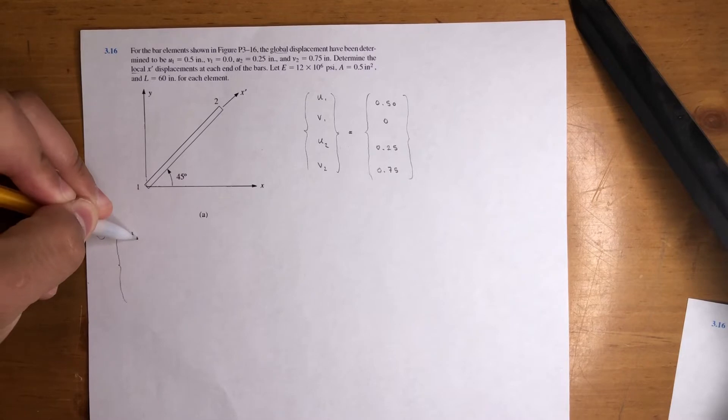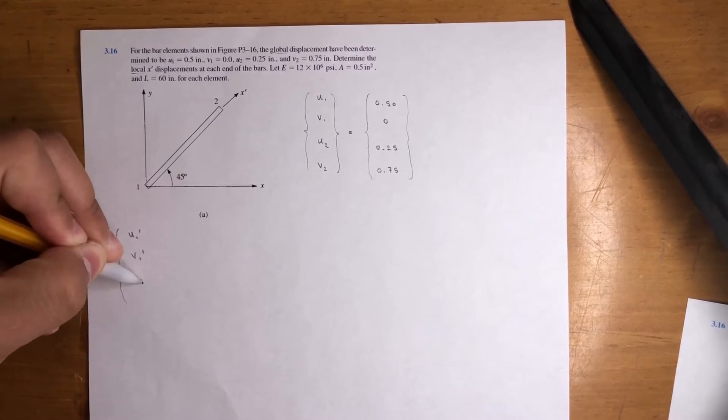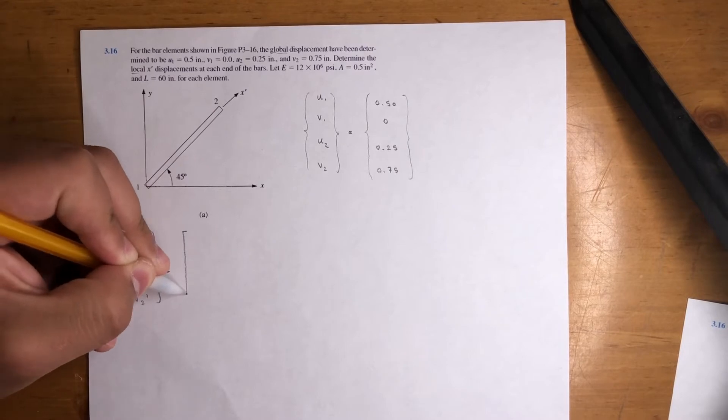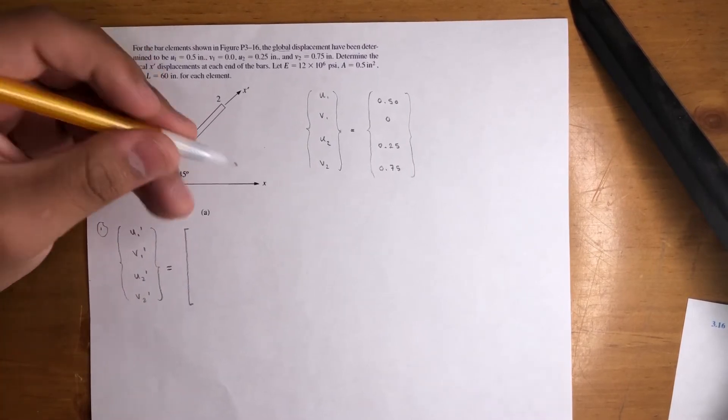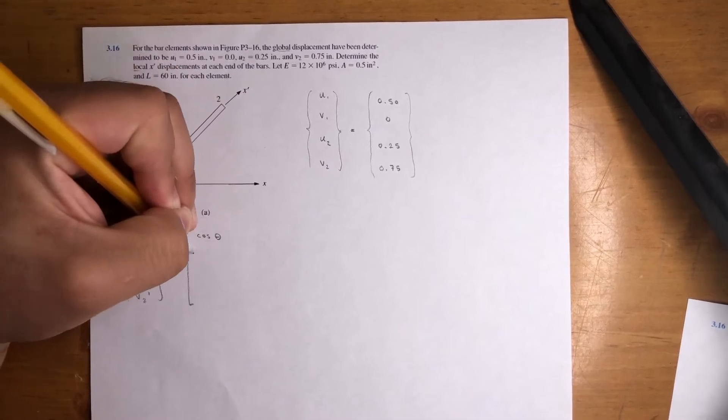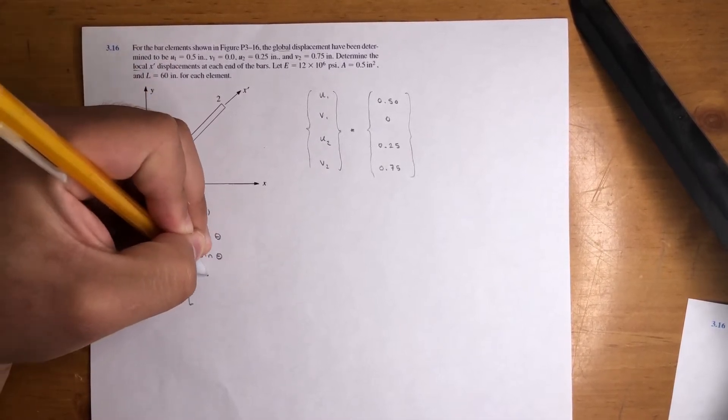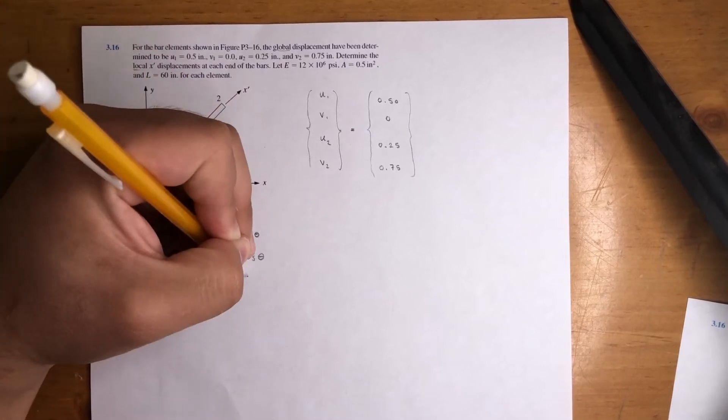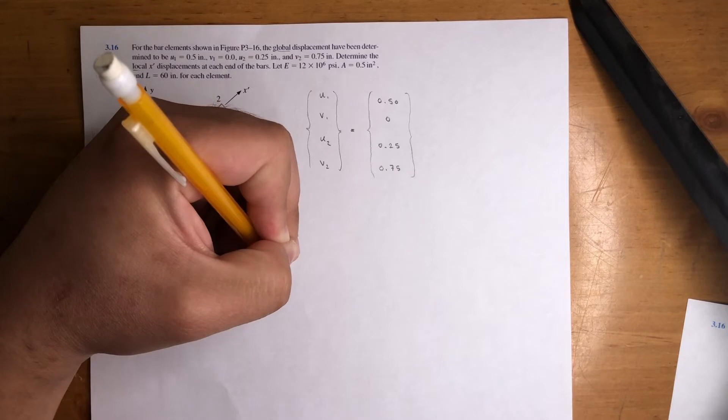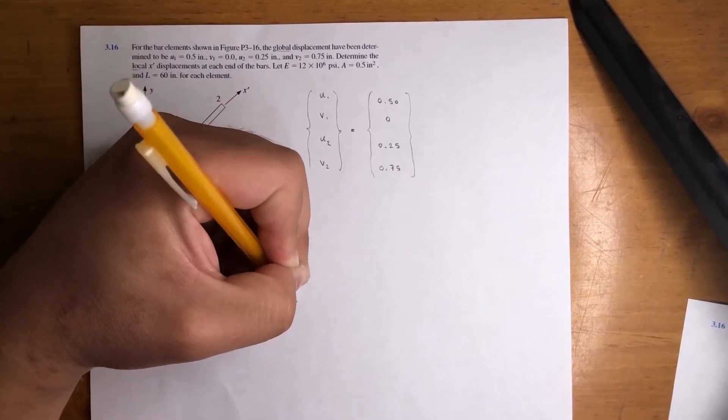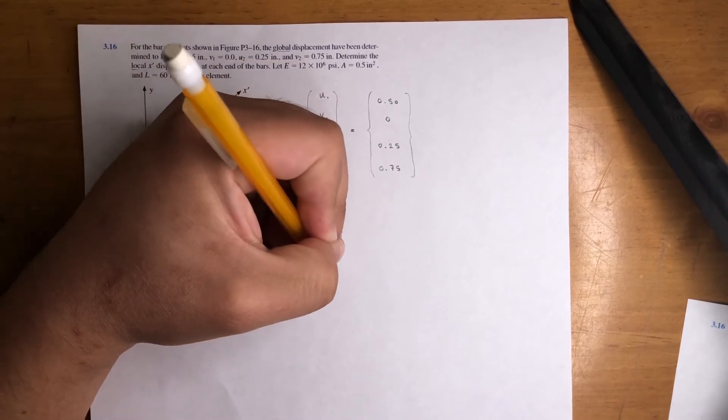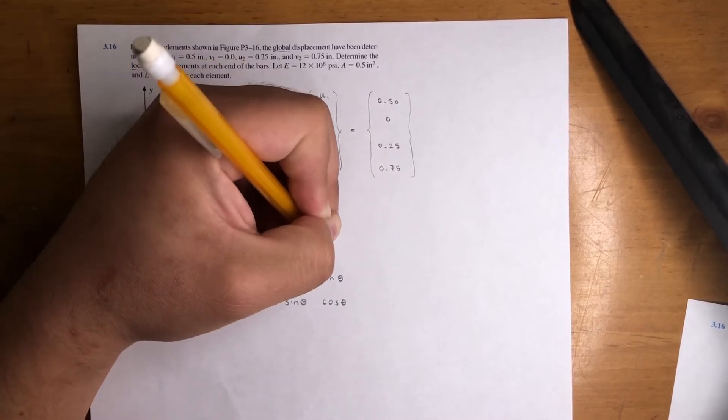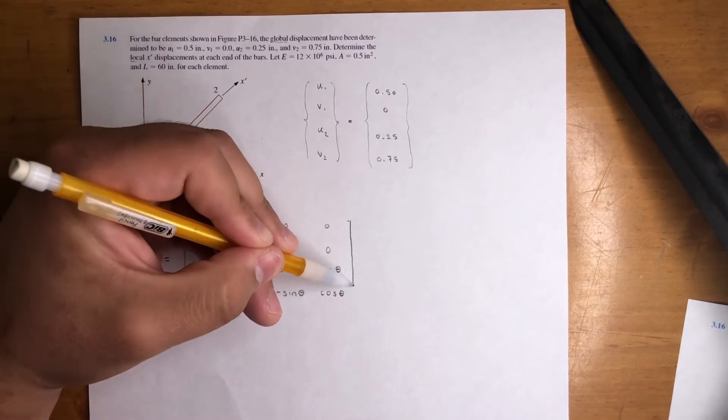So check this, so it's going to be U1 prime, what we're looking for, V1 prime, U2 prime, and V2 prime. So that's what we're looking for. And we're going to use a transformation matrix to get there. That transformation matrix is cosine theta, negative sine theta, 0, 0. It is sine theta, cosine theta, 0, 0. Then over here, it's going to be cosine theta, and negative sine theta, sine theta, and cosine theta. So that's really all it is. This matrix here is dimensionless. It's just a transformation matrix to go from global to local.